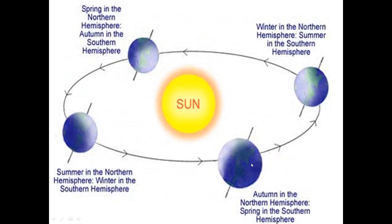Coming back to this part: here we see the northern part is facing towards the Sun, so this is autumn in the northern hemisphere and spring in the southern hemisphere. At another point, the southern pole is tilted towards the Sun — it is summer in the southern hemisphere and winter in the northern hemisphere. In this position, the southern hemisphere is facing towards the Sun, so this is autumn in the southern hemisphere and spring in the northern hemisphere.